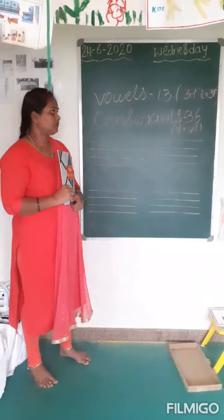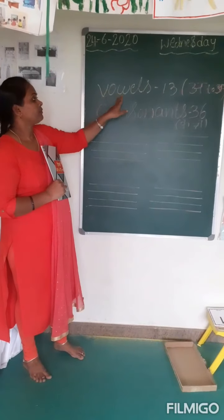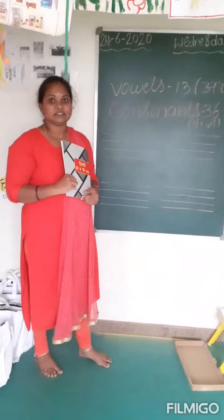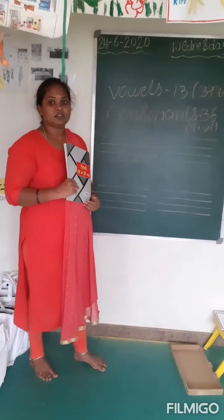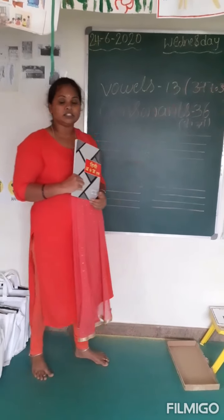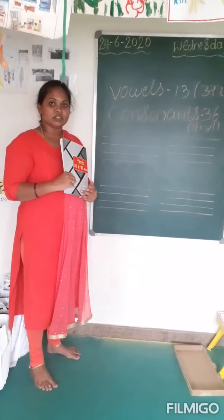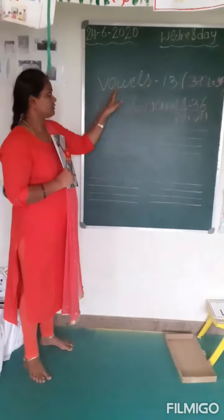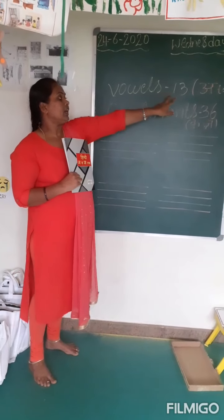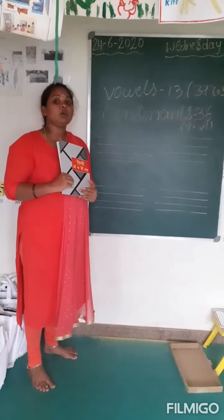Like in English, we have vowels and consonants in Hindi also. What we call vowels, children? We call vowels as Swarakshar. Swarakshar means A to AHA. We learnt this in LKG. We already know A to AHA. How many alphabets are there in vowels? There are 13 alphabets in vowels — A to AHA.